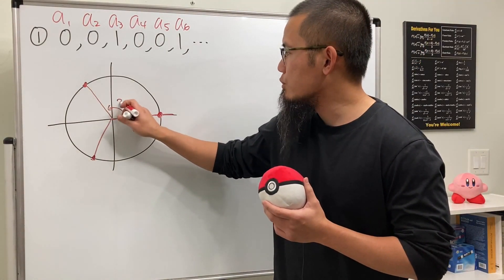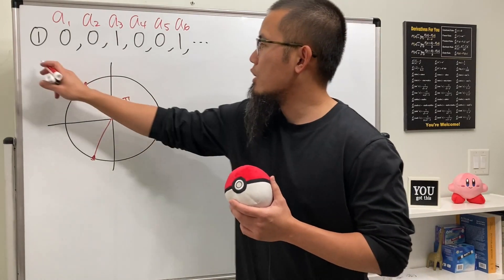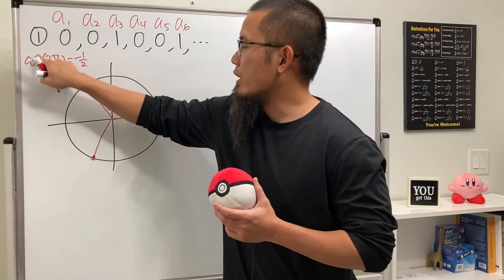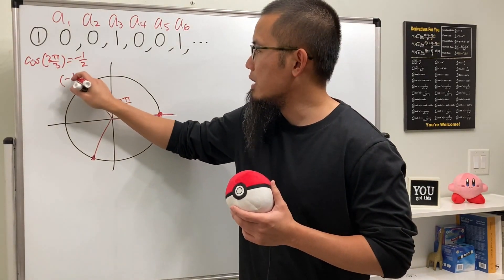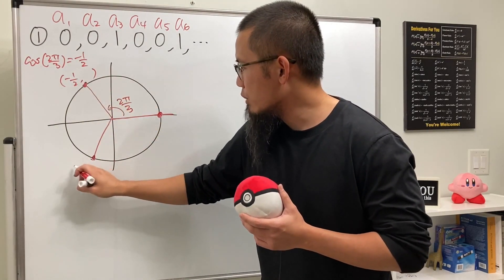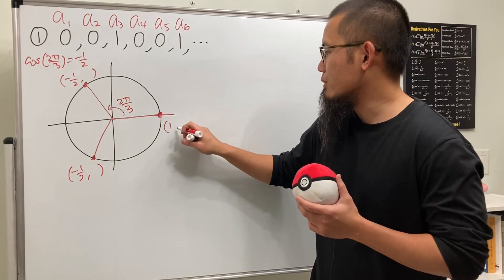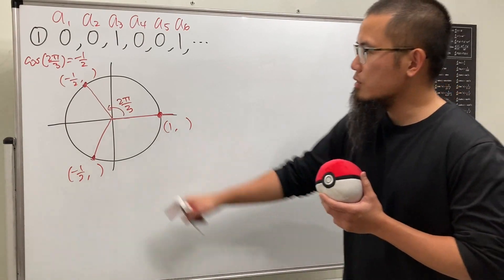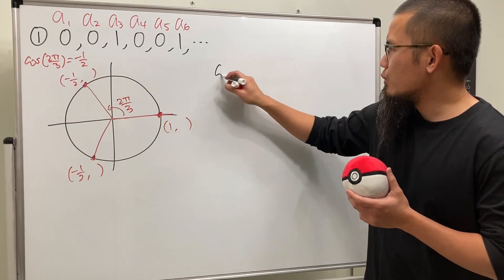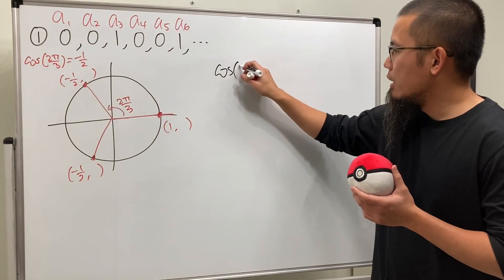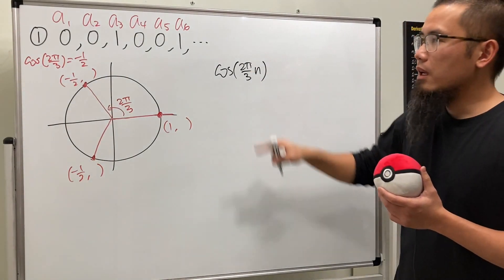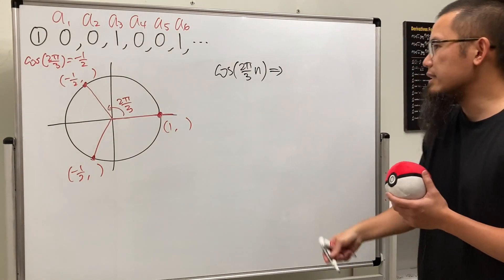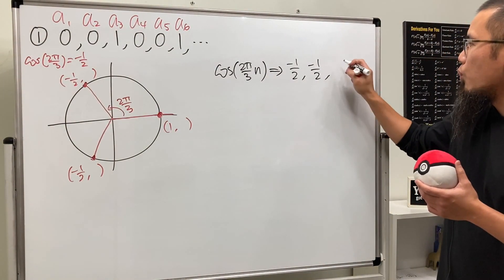It would be easier to use cosine in this case. Since we rotate 2π over 3, this right here is just cosine of 2π over 3, which is negative 1/2. So the x value at this point is negative 1/2, and at the next point also negative 1/2, and then 1. We're looking at the cosine values — the x values. If we have the formula cosine of (2π/3)·n, with n starting at 1, this will produce negative 1/2, negative 1/2, 1, and so on.